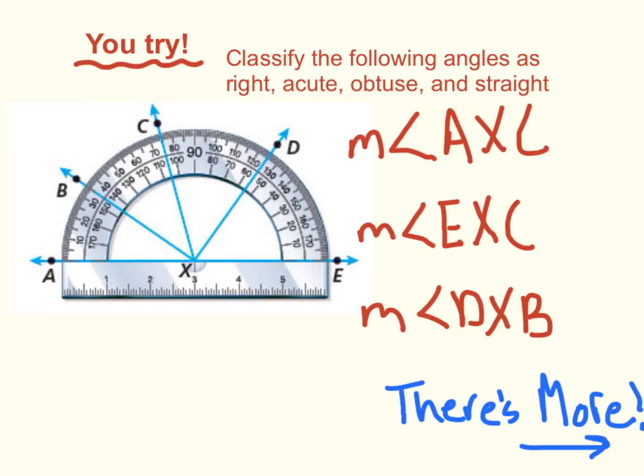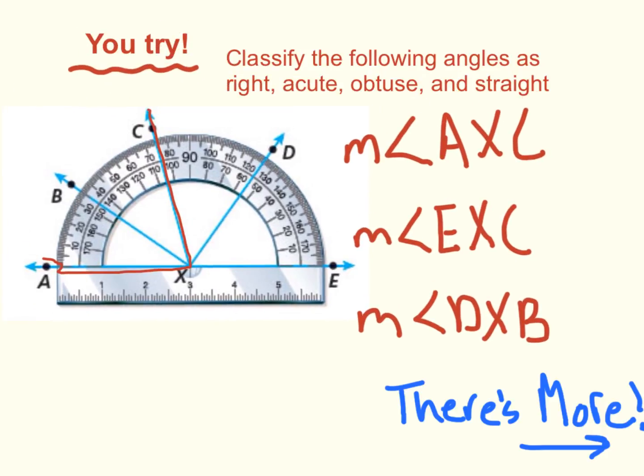So, let's take a look at the first one. M, or the measure of angle AXC. First, we start at A, to our vertex X, and then up to C. We'll use the measurements on the protractor to count how many degrees are in between ray A and ray C. So, if we count along the protractor, we count 75. There are 75 degrees. So, 75 degrees is less than 90 degrees but greater than zero. And that we label as acute. Aww.